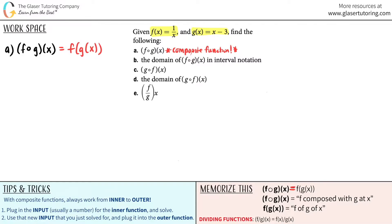Composite functions are just a fancy way of saying we're taking two functions — in this case f and g — and meshing them together to create one single output. With composite functions, always work from the inner function to the outer function, meaning the one that's deeper in the parentheses. Here, g of x is inside the parentheses, so g is the inner function and f is the outer function.